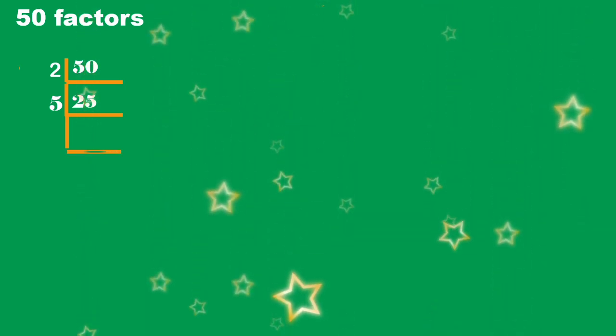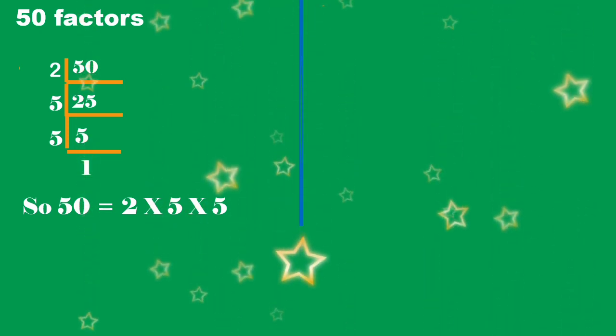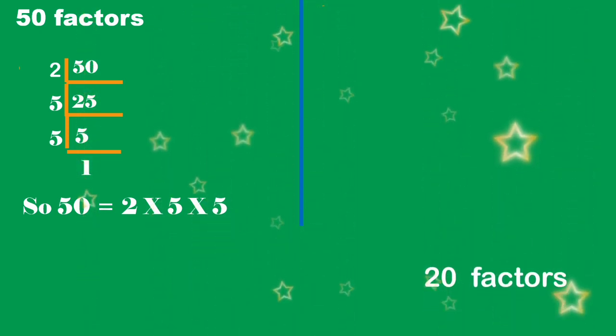Next, I'm going to show how to find the factors for 50 and 20. Finding factors of 50: 50 is an even number, so it's divided by 2. 50 divided by 2 is 25. Then 25 is an odd number, so it's divided by 5. 25 divided by 5 equals 5. And 5 is also odd, so 5 divided by 5 equals 1. So 50 = 2 × 5 × 5.